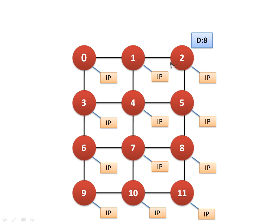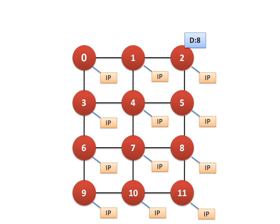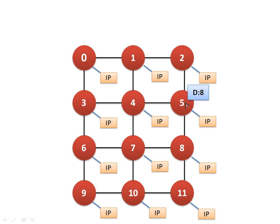Now node 2 will calculate whether node 8 is in the same column. It is. Now it will compare its row number with node 8's row number. It finds that the row number of node 8 is higher than the row number of node 2. So it will send the packet in the Y direction, towards the south. The next node does the same thing — it finds that the row number of 8 is higher and forwards it to node 8.